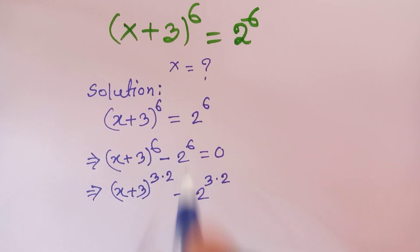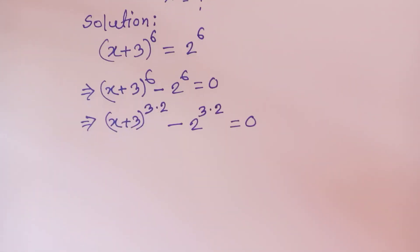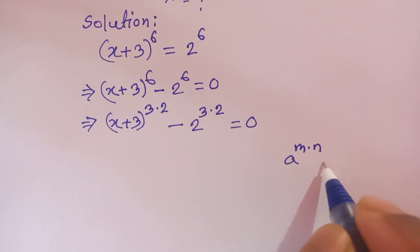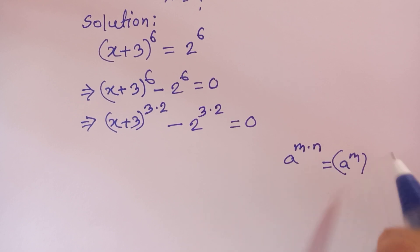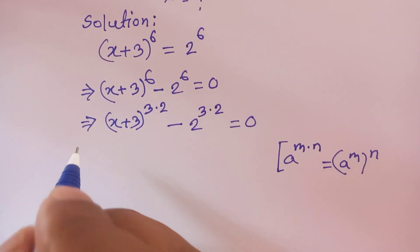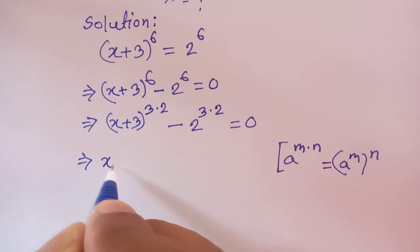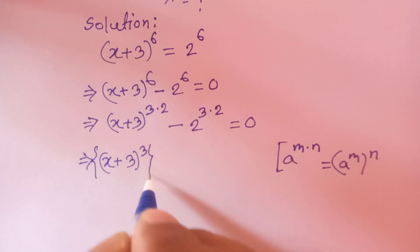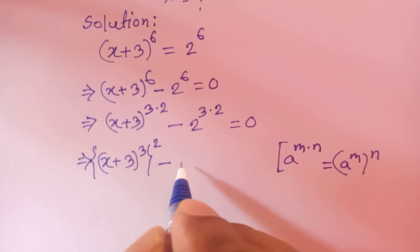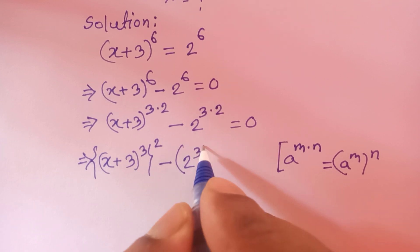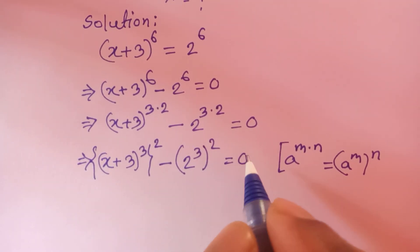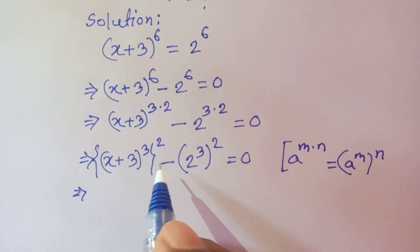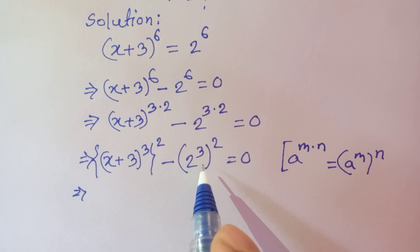We know that a to the power m times n can be written as a to the power m, whole to the power n. According to this formula, we can write x plus 3 to the power 3, whole to the power 2, minus 2 cubed, whole squared, is equal to 0.